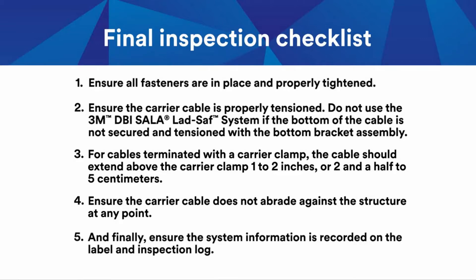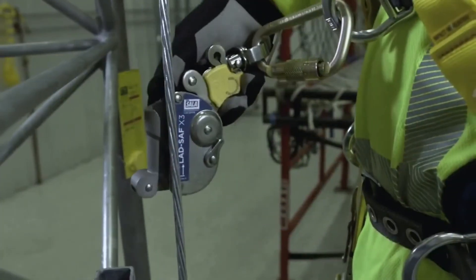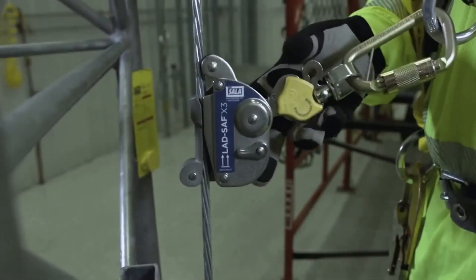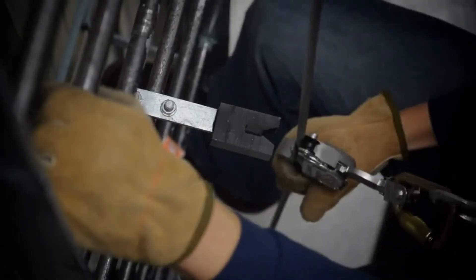And finally, ensure the system information is recorded on the label and inspection log. Inspect the system before each use. To use, simply attach the 3M DBI Sala Lad Safe X2 or X3 detachable cable sleeve to the cable, and climb.